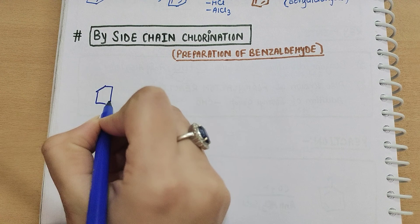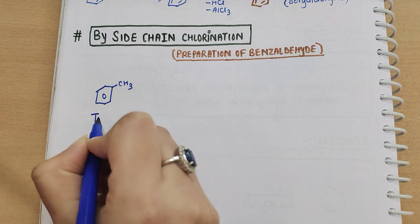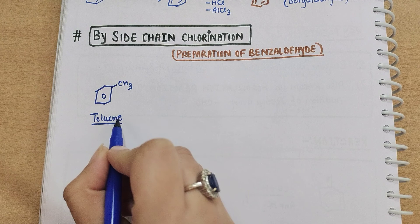It is an aromatic ring. Suppose I am making an aromatic ring here. I have written CH3 on this. This is toluene.